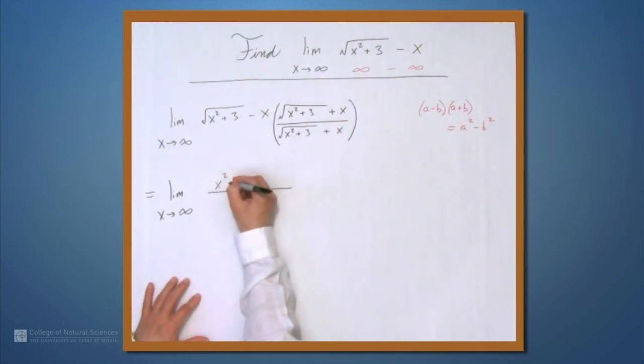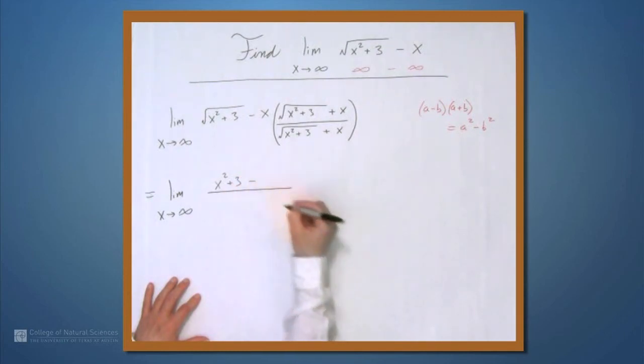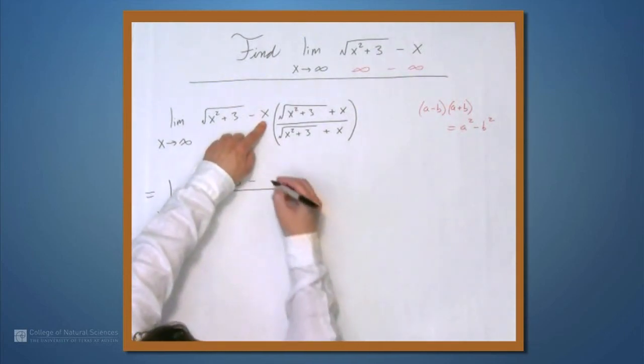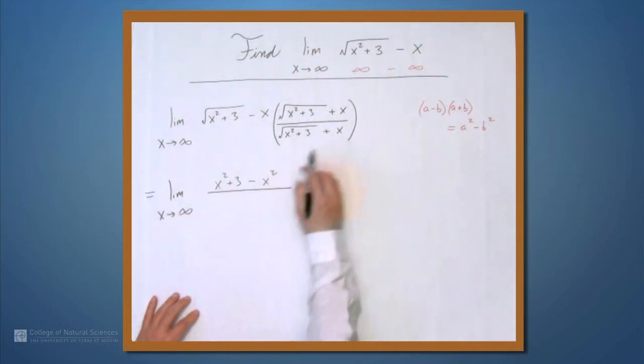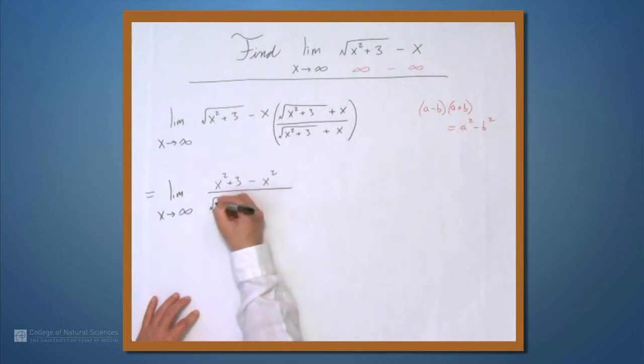This becomes x squared plus 3, that's a squared minus b squared. b is x, so minus x squared. Then the denominator is simply the square root of x squared plus 3 plus x.